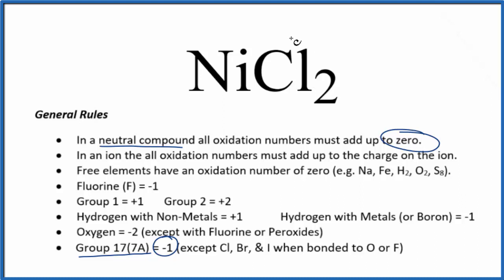So each chlorine is going to have minus 1. We have 2 chlorines, so 2 times minus 1, that's minus 2. In order for this to all add up to zero, we have to have a plus 2 here for the oxidation number on the nickel.